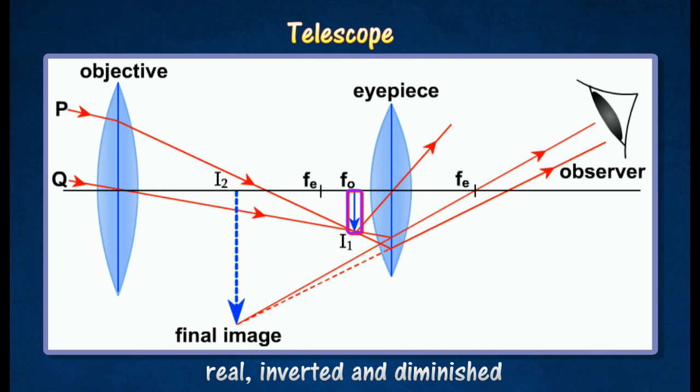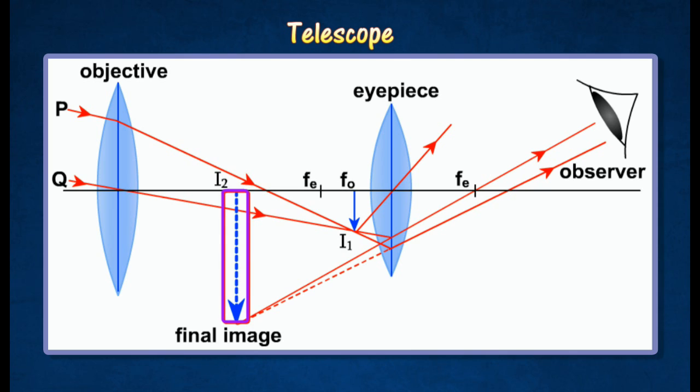Image I becomes the object for the eyepiece. The eyepiece acts as a magnifying glass and it is adjusted to produce a final image which is virtual, inverted, and magnified.